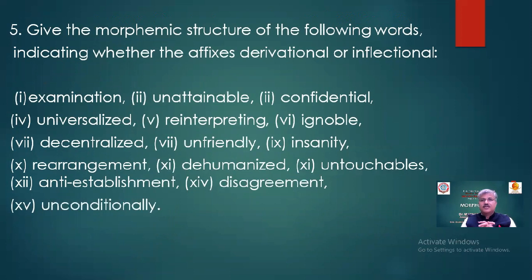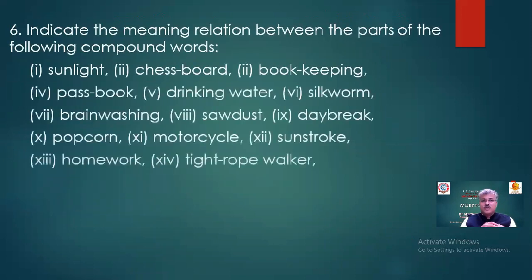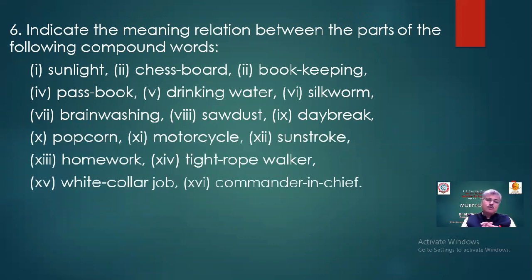You can write brief notes on back formation, word formation processes, and compounding. For morphological analysis, analyze the following words: revitalize, uninteresting, reintroduction, incapacitated, preordained, revengeful, employees, uncontrollable, unexpected, disallowed. Also give the morphic structure of: examination, unattainable, confidential, universalized, reinterpreting, ignoble, decentralized, unfriendly, insanity, rearrangement, dehumanized, untouchables, anti-establishment, disagreement, unconditionally.